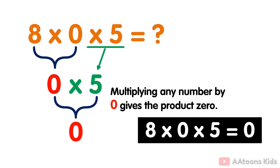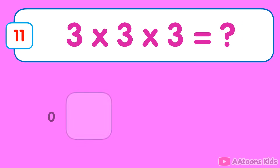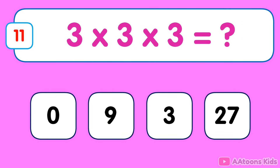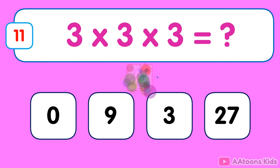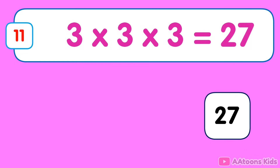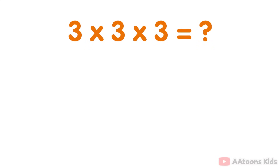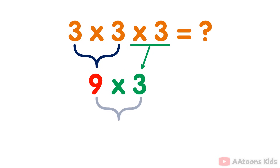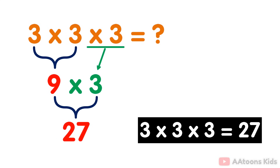3 multiplied by 3 multiplied by 3. The answer is 27. Simply multiply the numbers 3 and 3 which equals 9, then you multiply the result 9 by 3. You will get 27. Therefore, the answer to 3 multiplied by 3 multiplied by 3 is 27.